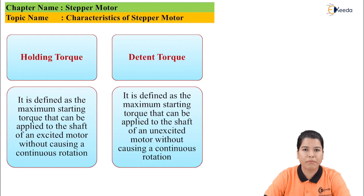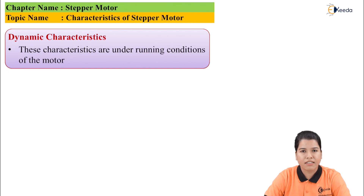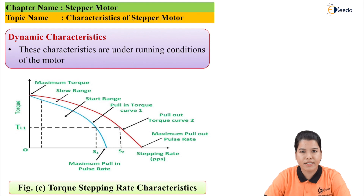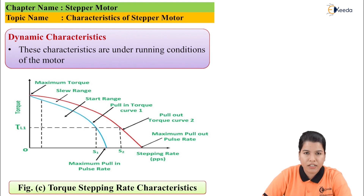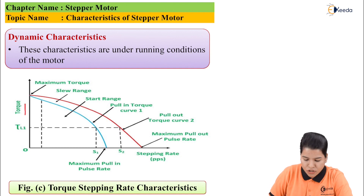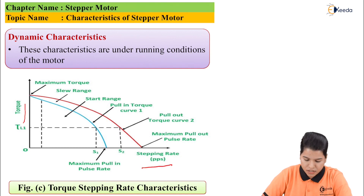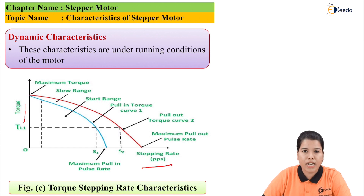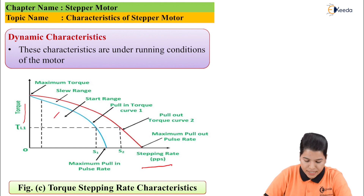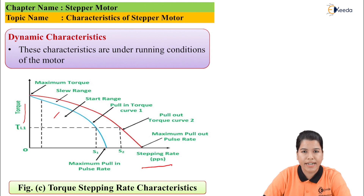Now let us study the dynamic characteristic. Dynamic characteristics are considered under the running condition of the motor. The figure shows the characteristic. On the y-axis there is torque, whereas on the x-axis there is stepping rate. There are two curves — one shown by the blue line and the second shown by the red line.